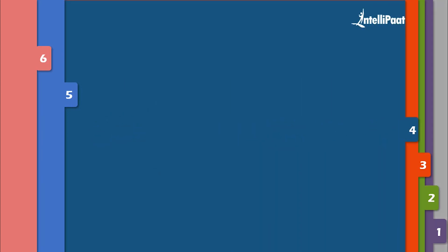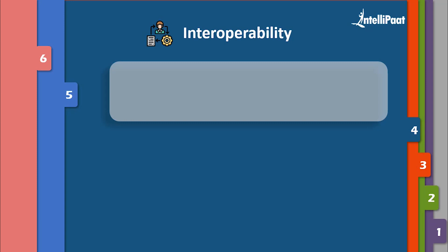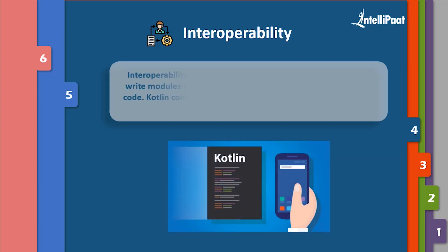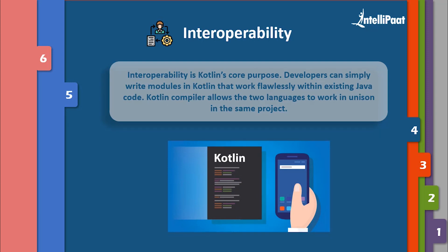Let us discuss lean syntax, conciseness, and interoperability. Interoperability is Kotlin's core purpose. From the beginning, the project's intention has been to use existing knowledge and expertise to make every library available to Kotlin programmers. Developers can simply write modules in Kotlin that work flawlessly with existing Java code. By emitting bytecode, a Kotlin compiler allows the two languages to work in unison in the same project. One-line functions take just one line, and simple structs or Java beans can also be declared in one line. Real properties generate getters and setters behind the scenes for Java interoperability, and adding the data annotation to a class triggers auto-generation of boilerplate like equals, hashCode, toString, and more.